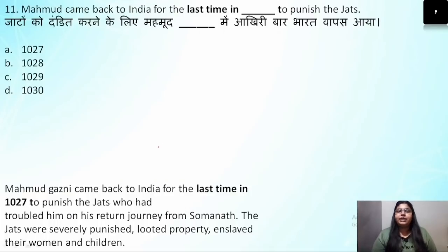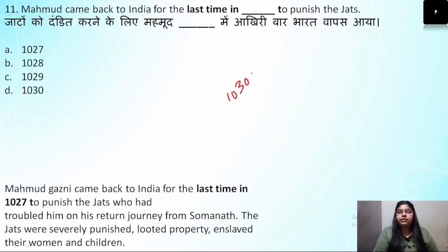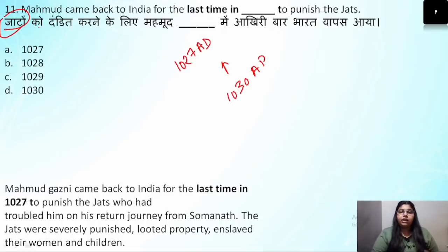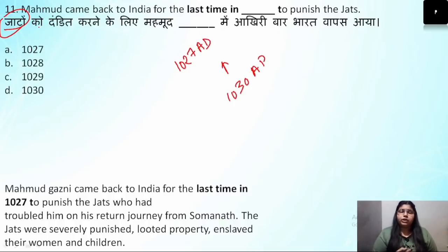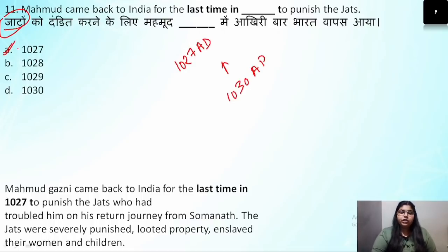Question number 11: Mahmud came back to India for the last time to punish the Jats. His death was in 1030 AD, but before that, he came to India one last time in 1027 AD. His reason for coming was that the Jats had looted his caravan on his return journey from Somnath. To punish them, Mahmud came back to Bharat in 1027 AD.